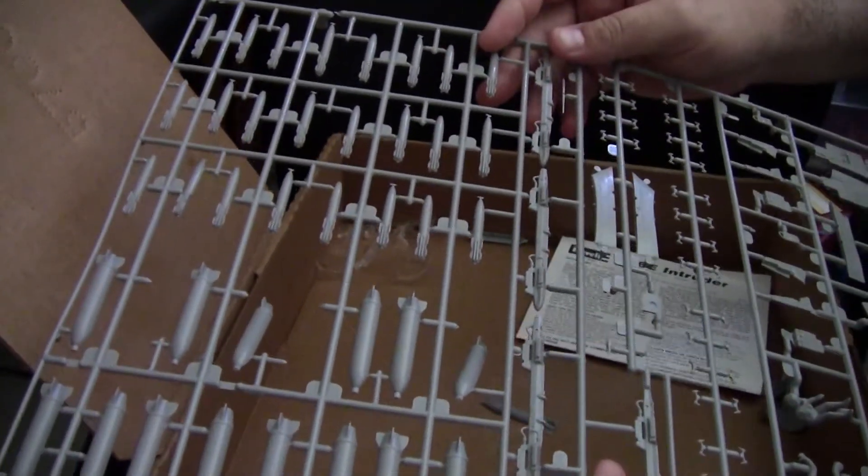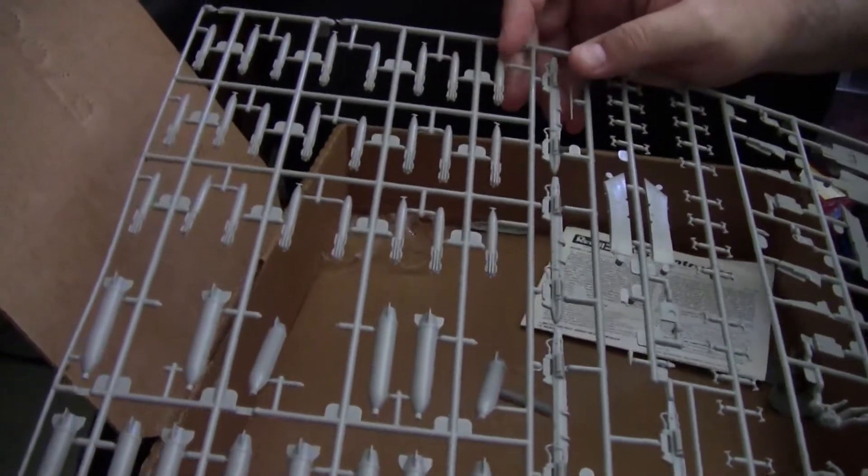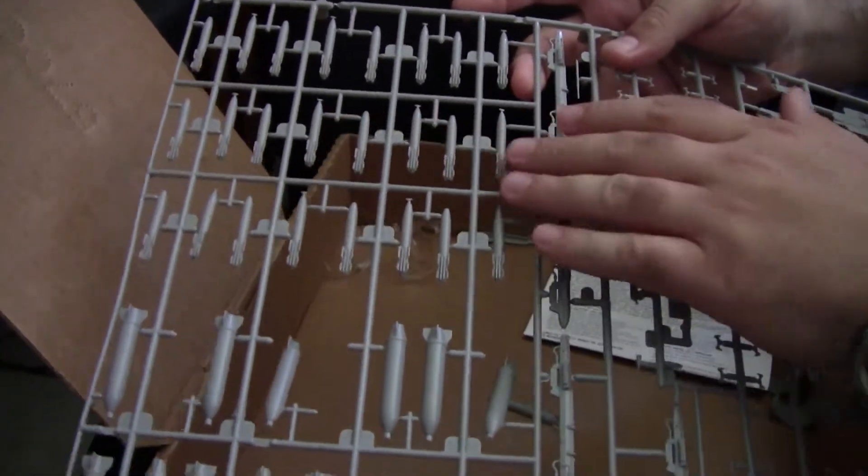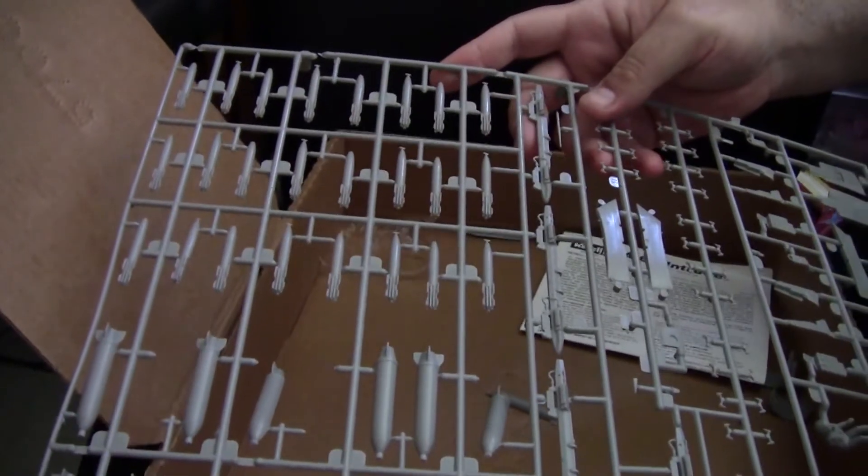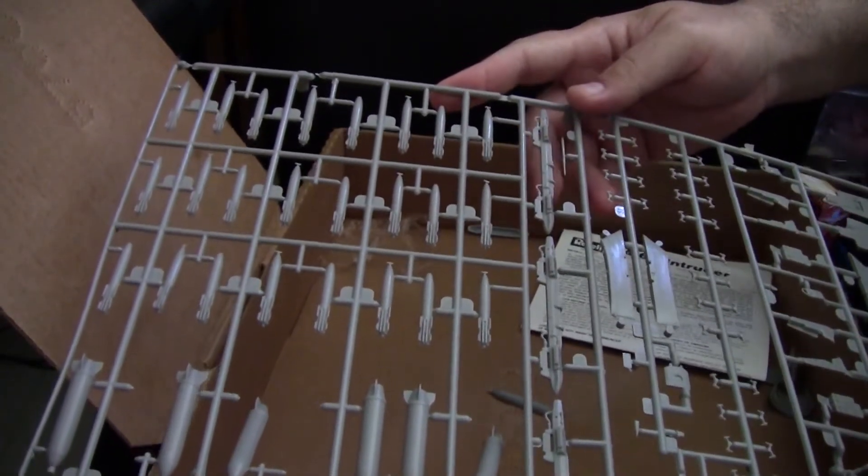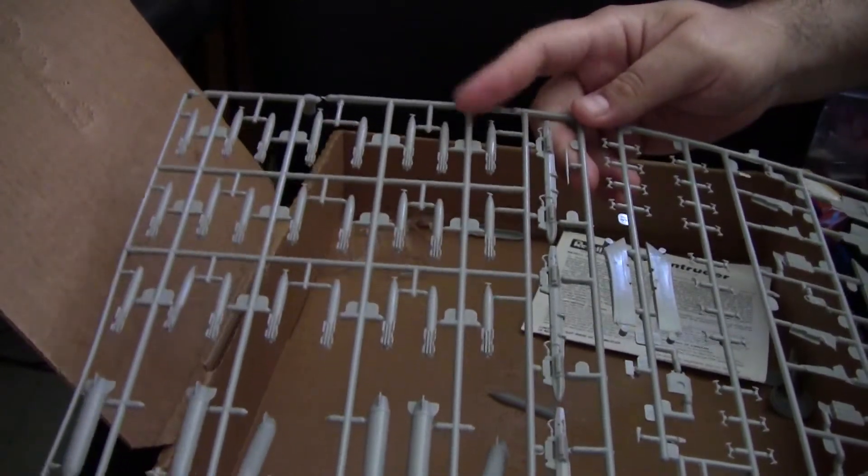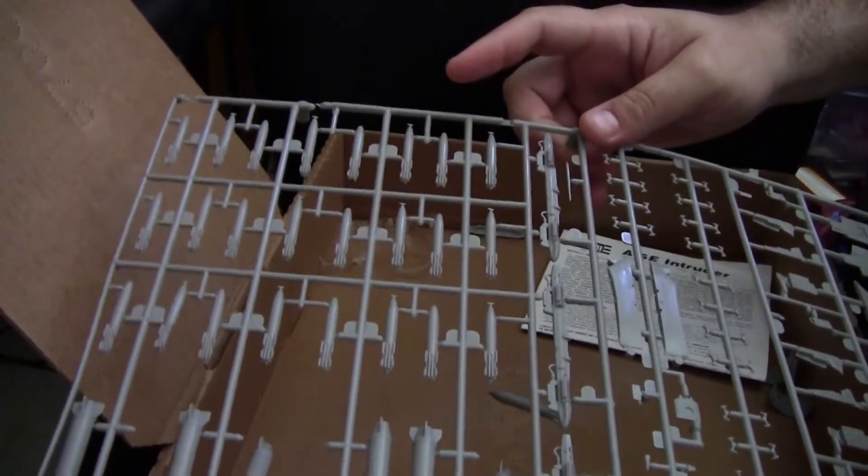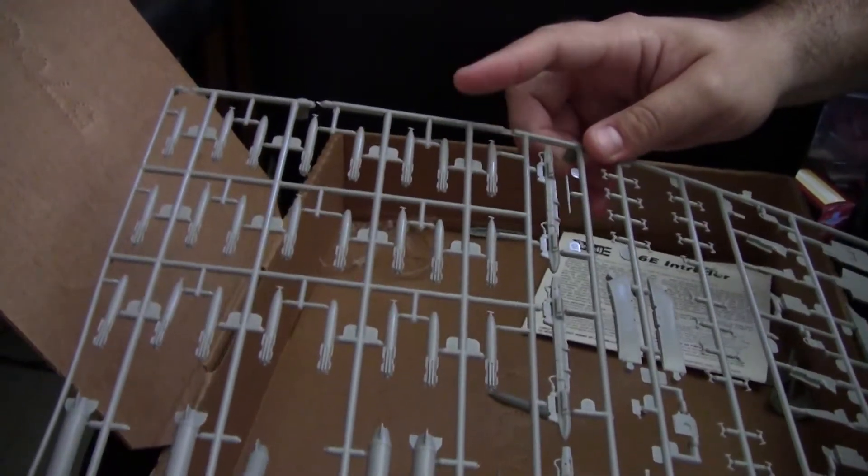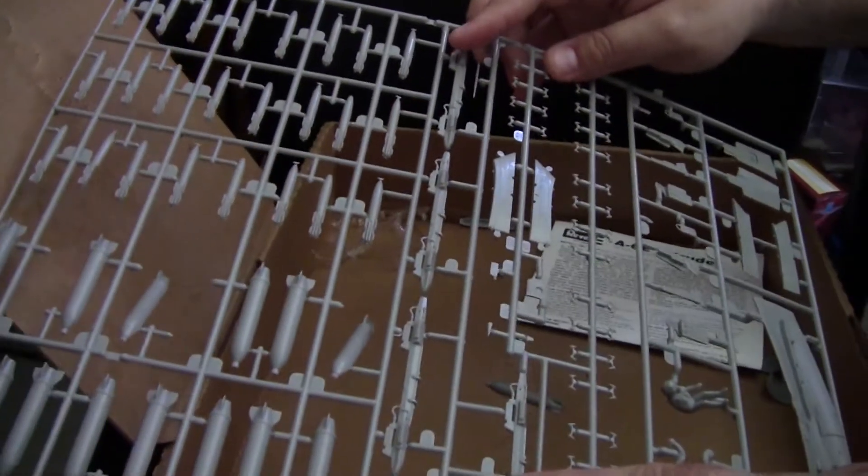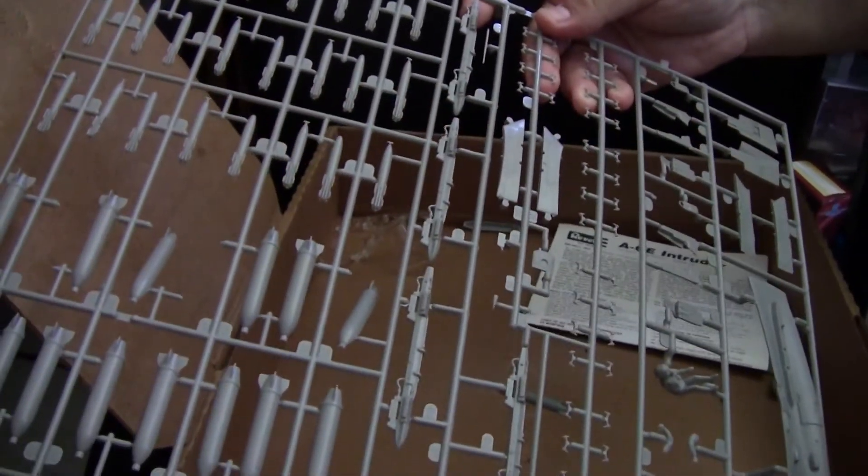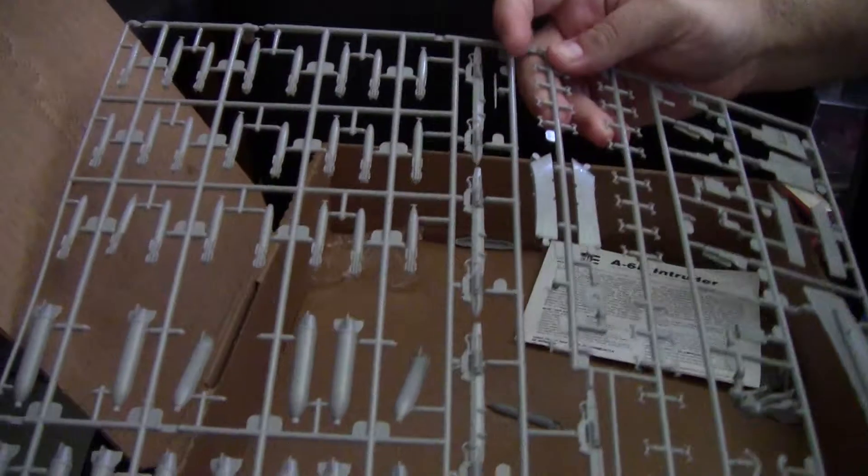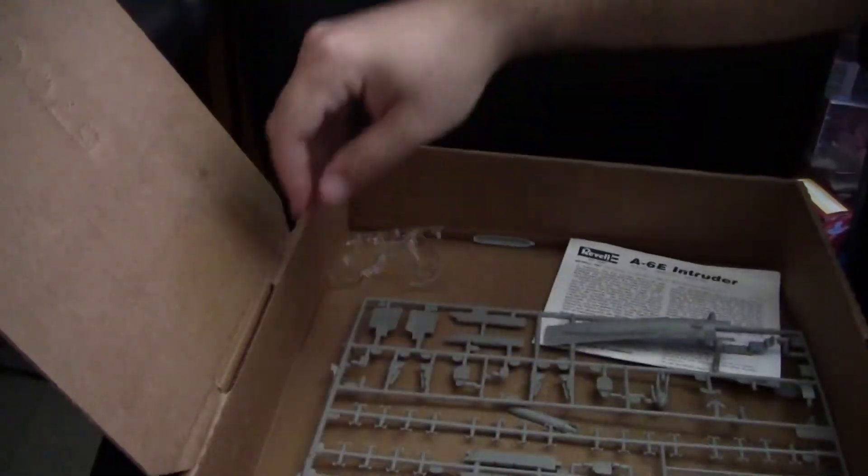Now this is where this kit really is a letdown is in the armament. While you do get a nice assortment and the clusters are nicely represented, however, the snake eyes are really undersized. And I would say definitely look at picking up Hasegawa's weapon set A, I believe, for the bombs in 1:48th, and using those as they will do a better job of representing the ordinance. You do get four multi-ejector racks, which is a nice inclusion, and those are actually fairly decently done. So I would say keep the racks, but go with aftermarket bombs.